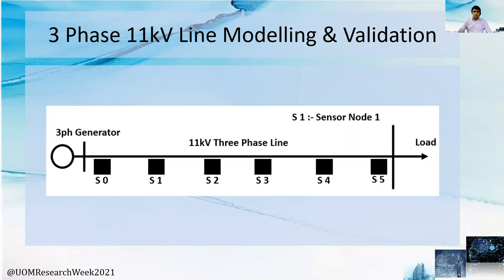This is the single line diagram of our model 11 kV distribution line. We used this system to conduct our experiments and develop the algorithms discussed earlier. This is an actual representation of the LECO distribution network with actual line parameters of a 6 km long, 11 kV distribution line at the WPTA substation. We have validated our model against the actual response of the LECO feeder under various types of faults with the same fault impedance at the same distance from the substation.